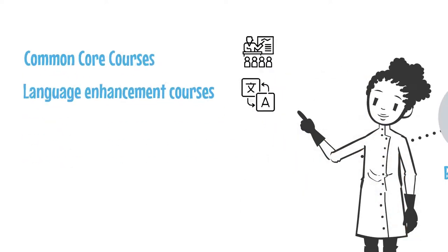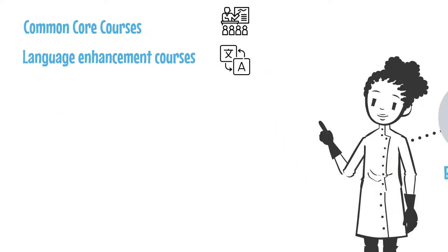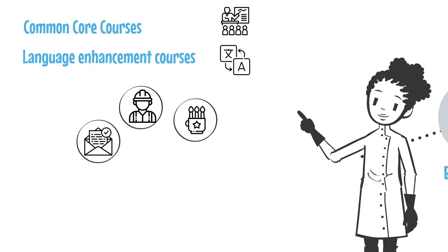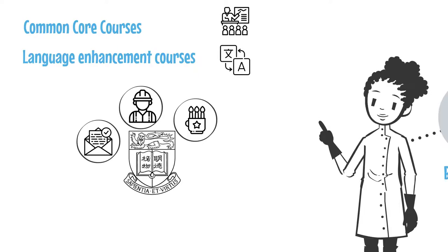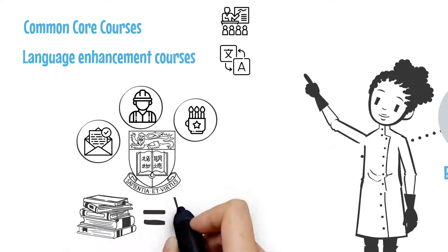Students choose common core courses and language enhancement courses, and may choose other courses across all of Hong Kong U as they wish to make up electives towards their 240 credits.